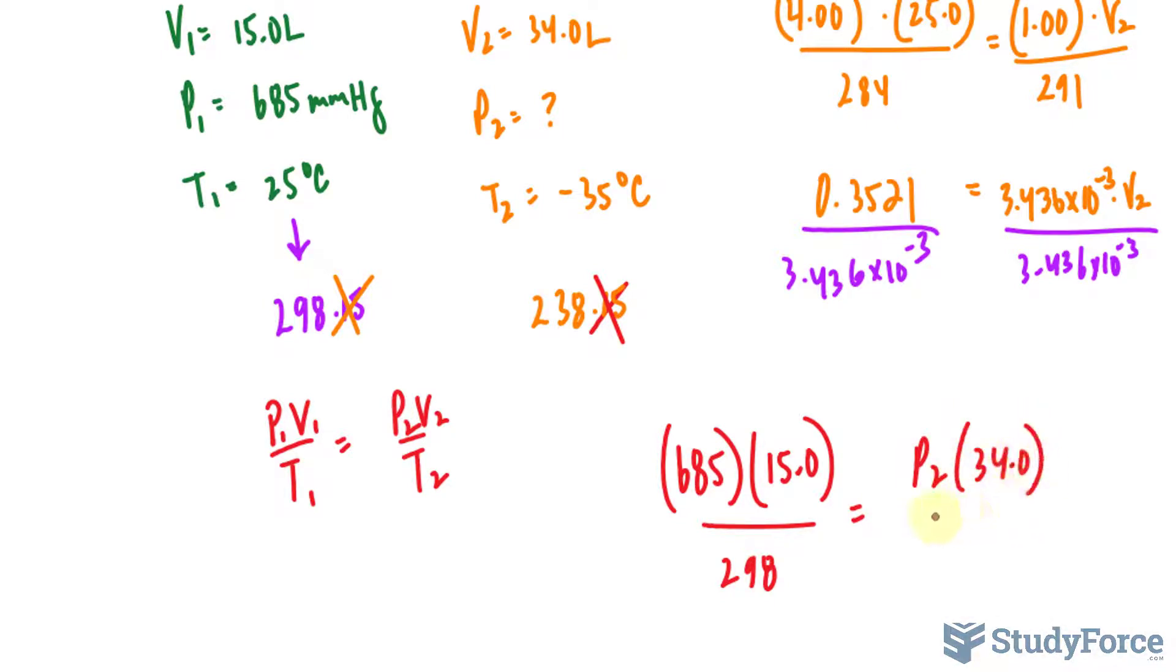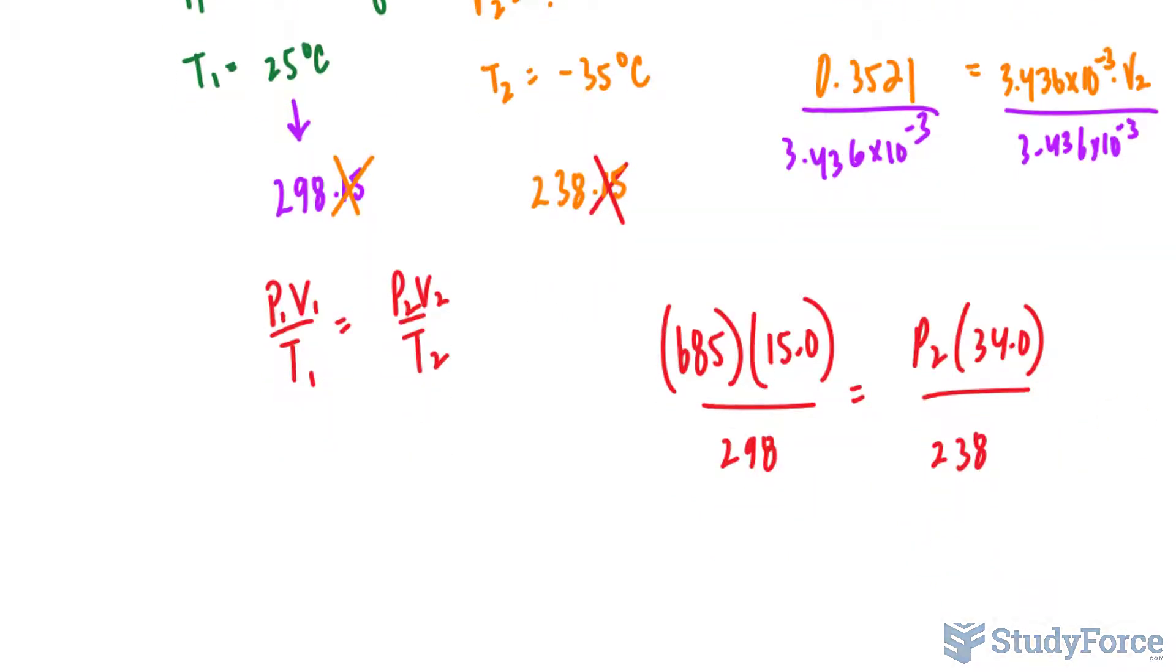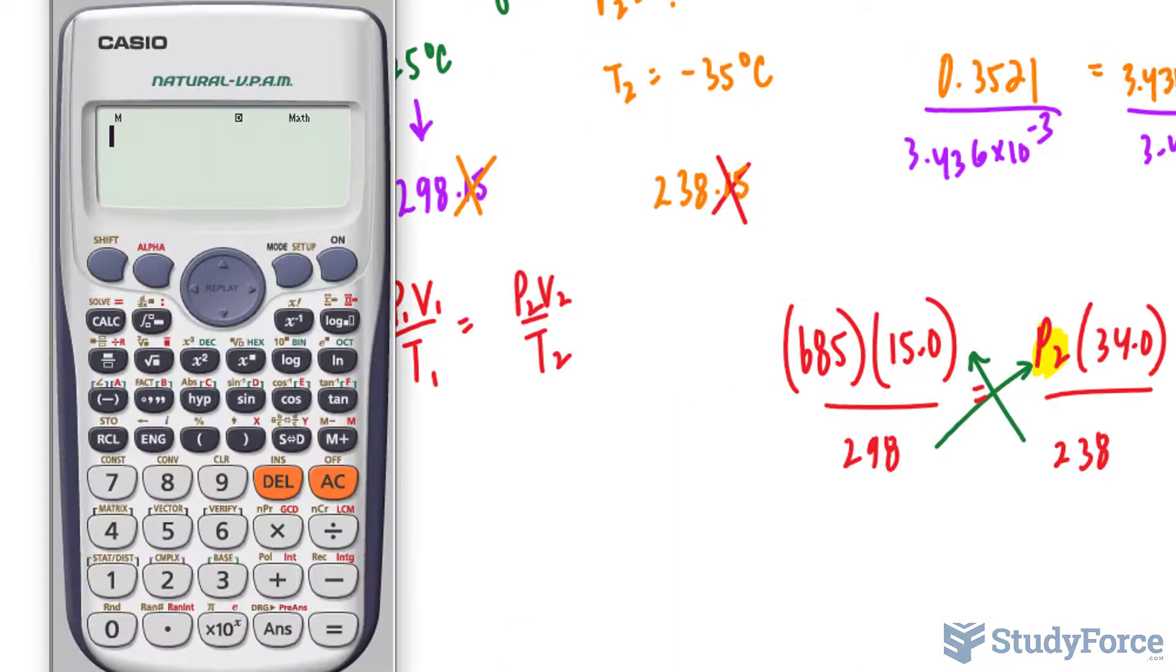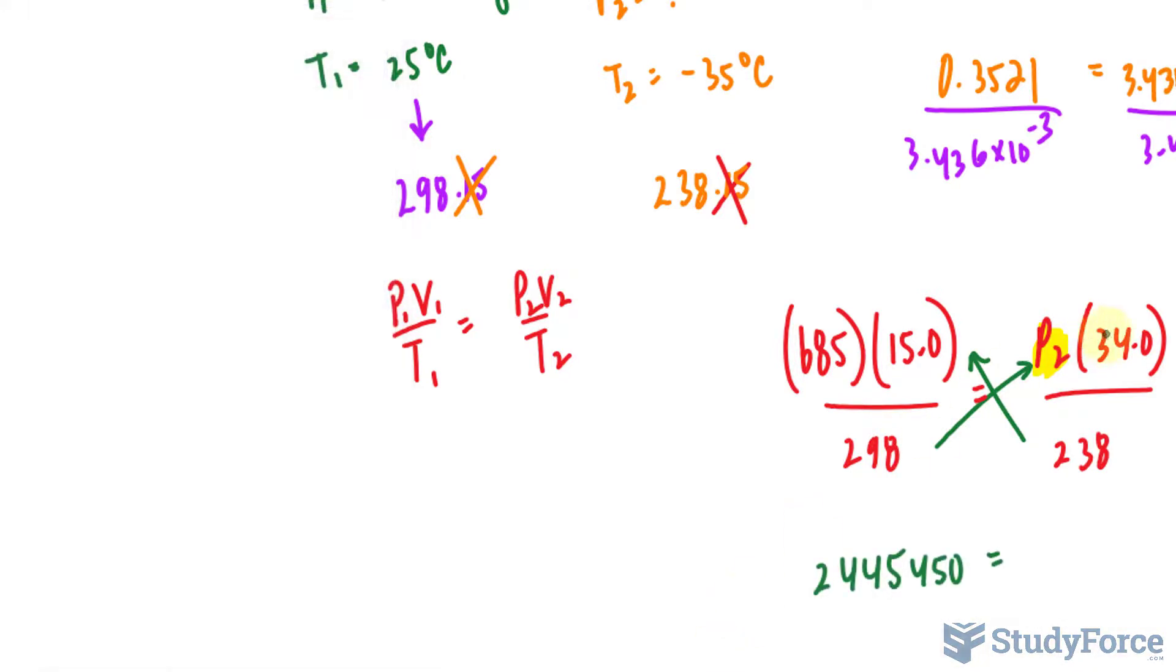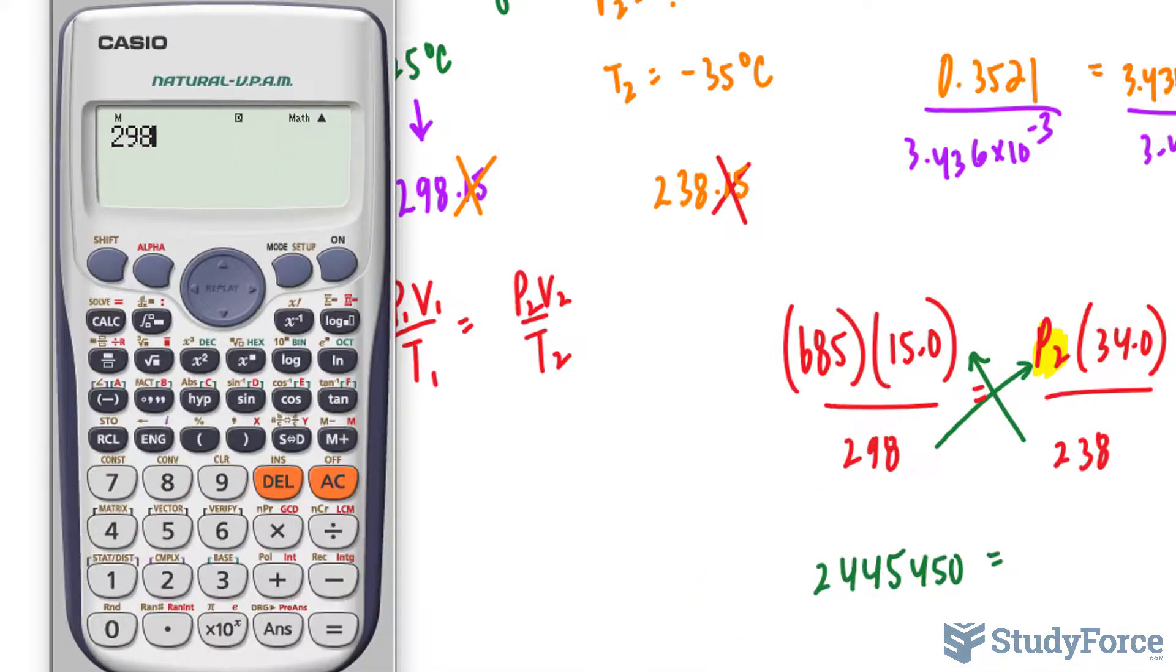So I'll multiply this denominator with these values and 298 with these values. Using our calculator, 238 times 685 times 15.0 gives us that value. 298 times 34.0 and we end up with 10,132.